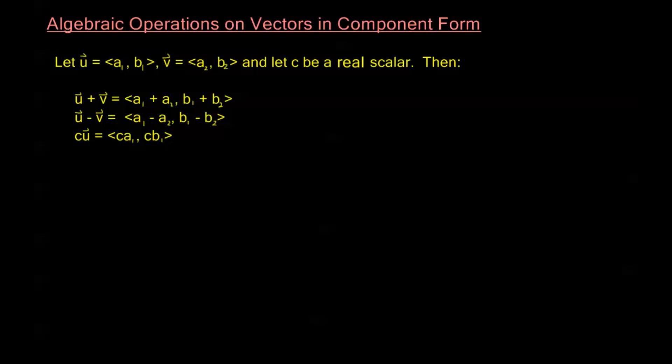Now this one in the middle, this is our difference, or subtraction. We have the vector u minus v is <a1 - a2, b1 - b2> for my new horizontal and vertical components. So we take a difference, and that turns into the difference of horizontal components and the difference of vertical components.